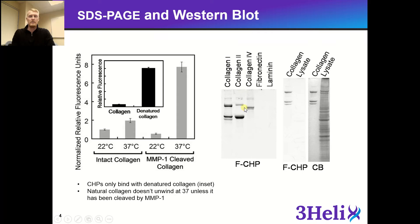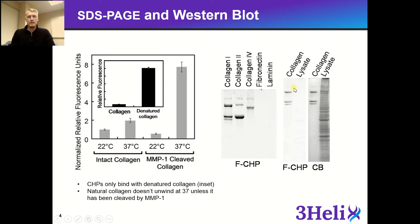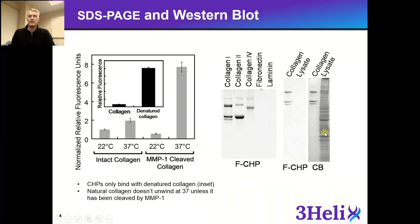We have collagen type 1, collagen 2, and collagen 4. You see these nice bands using the fluorescently labeled CHP, and you don't see any bands show up for fibronectin or laminin, which are other major components of the extracellular matrix. In this image to the right, we have collagen and also a cell lysate. The CHP only binds to damaged collagen, whereas the Coomassie blue stain shows a lot of bands for collagen as well as the numerous bands found in the cell lysate.